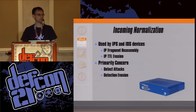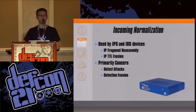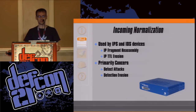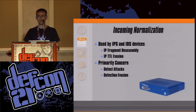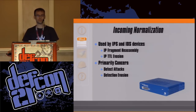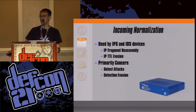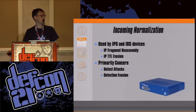This brings us to the first real normalization-only solution, used by IPS and IDS devices. The main job, as far as NIST space is concerned, is IP fragment reassembly and doing some checks on the TTL to make sure there is no evasion going on. Primary concern: detecting attacks and detecting evasions. But it's a normalization-only solution and once again, not enough nor the right kind of normalization — not effective for fingerprinting prevention, lacking the ability to cover the entire network.